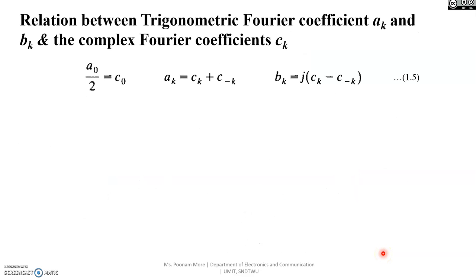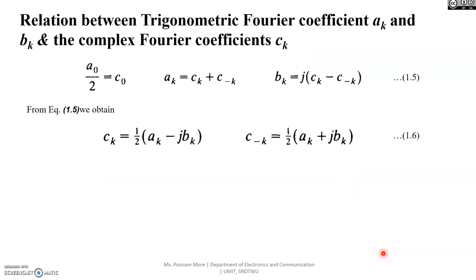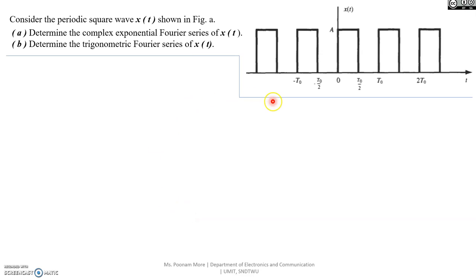Further, we can describe the relation between the trigonometric Fourier coefficients ak and bk and the complex Fourier coefficient ck, as represented in equations 1.5 and 1.6. These relations can be utilized when solving problems based on complex exponential Fourier series and trigonometric Fourier series representations.